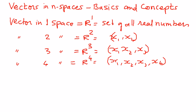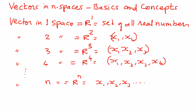And then we can represent it for any space like that. Therefore, vectors in n spaces is represented as Rn. This is a set of all ordered n-tuples of real numbers. That is what vectors in n spaces means.